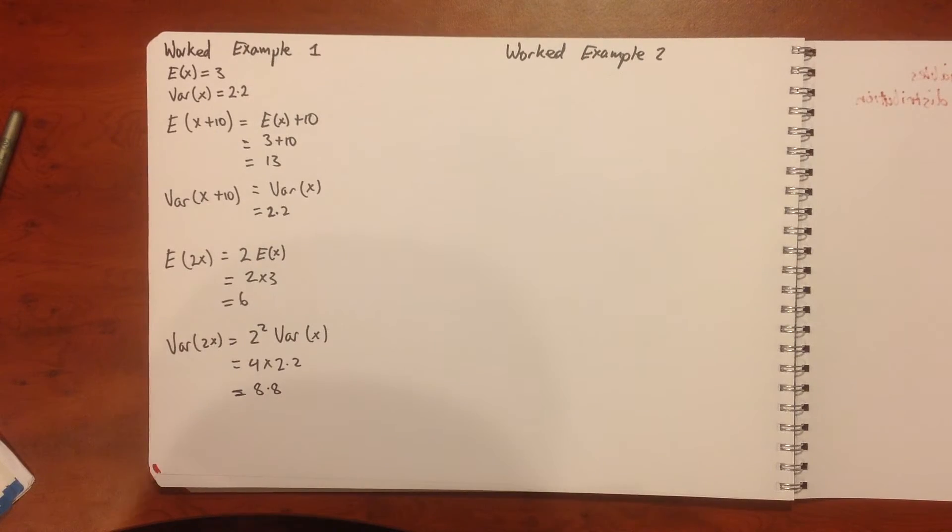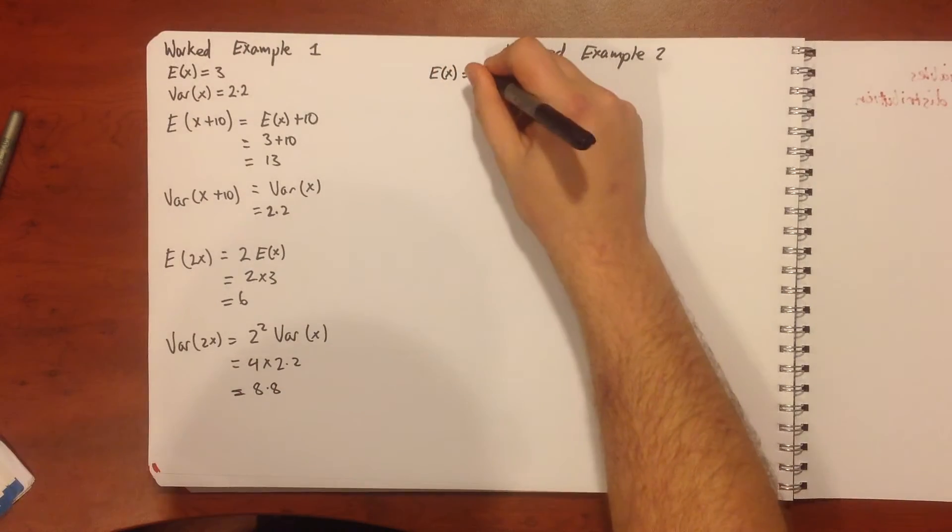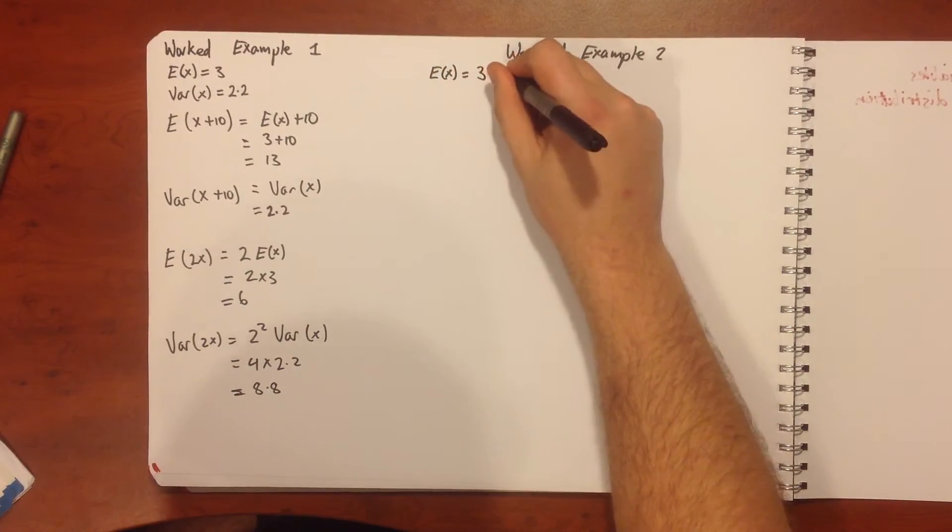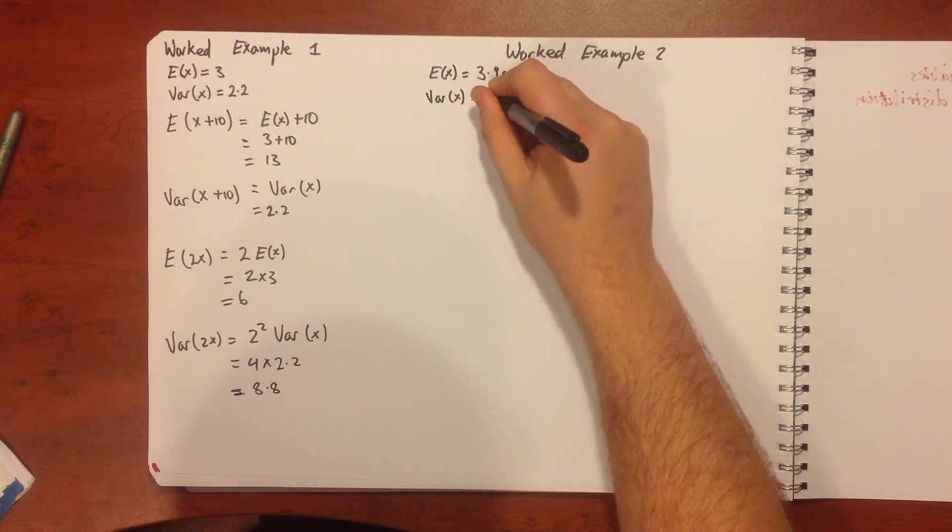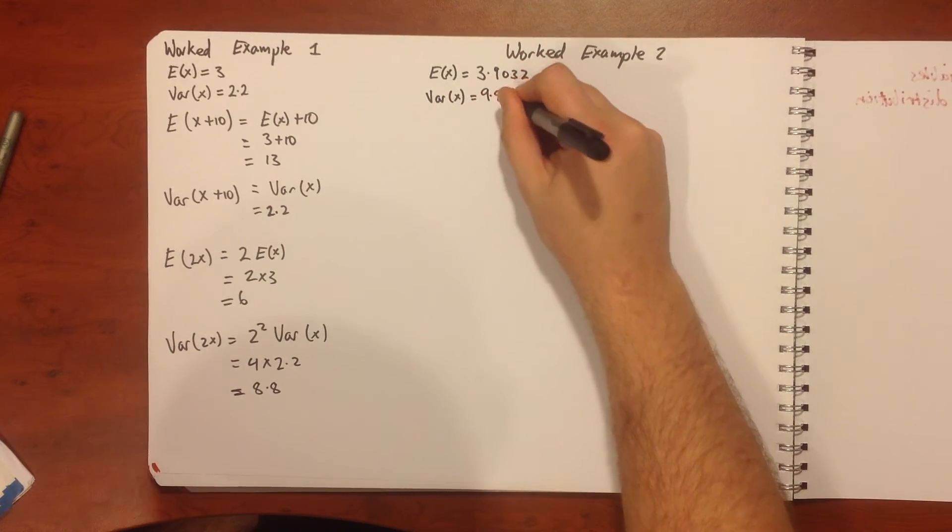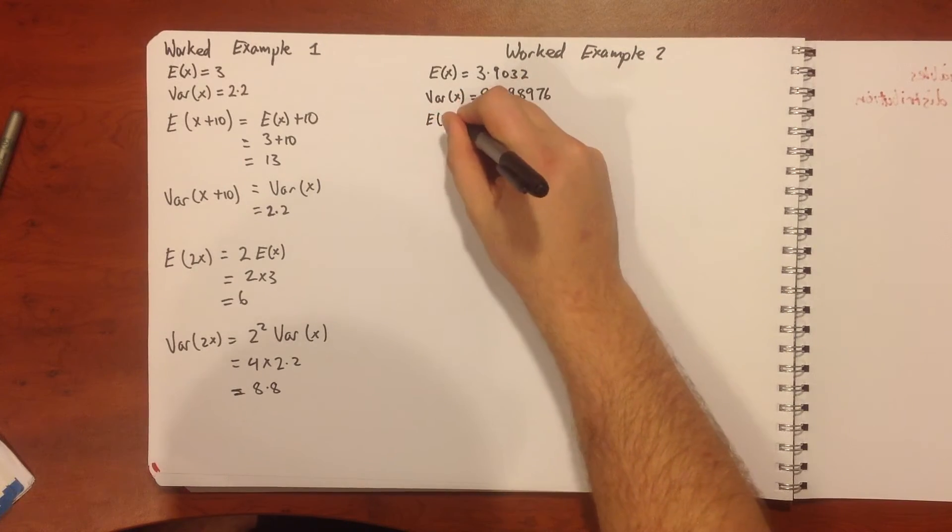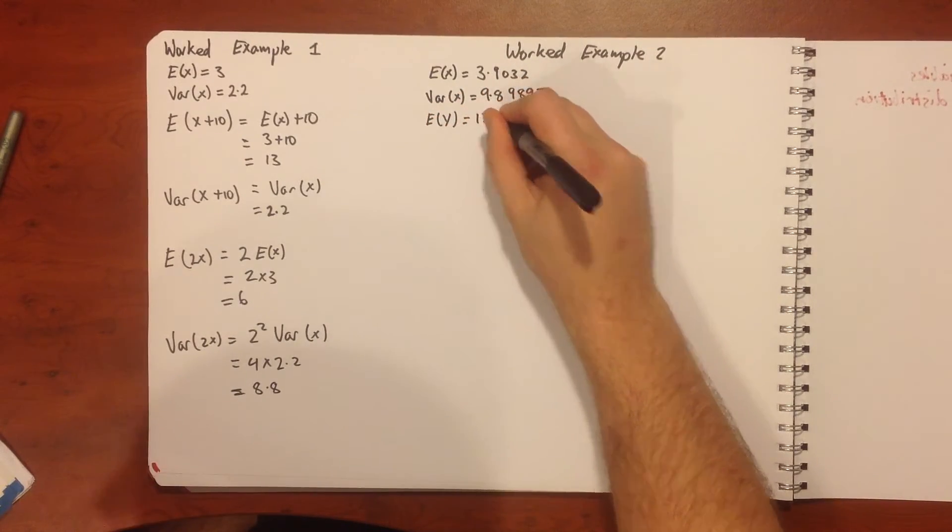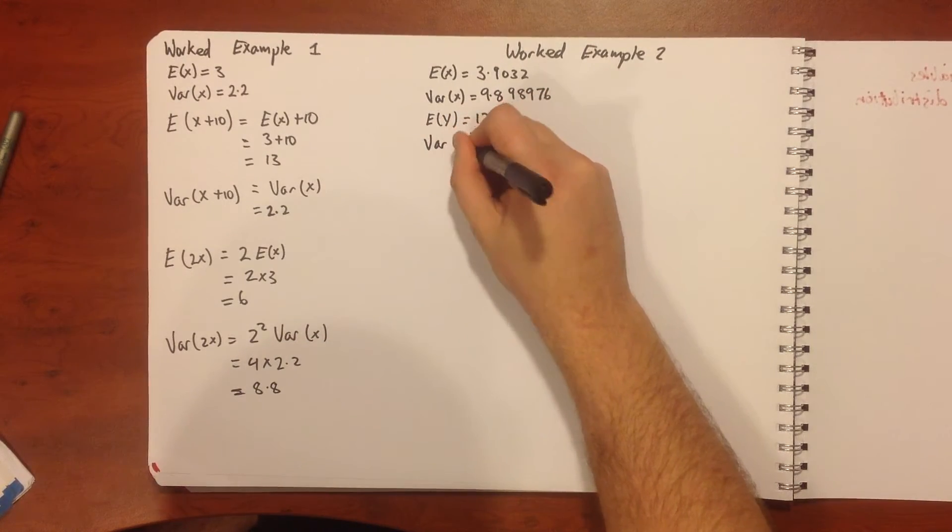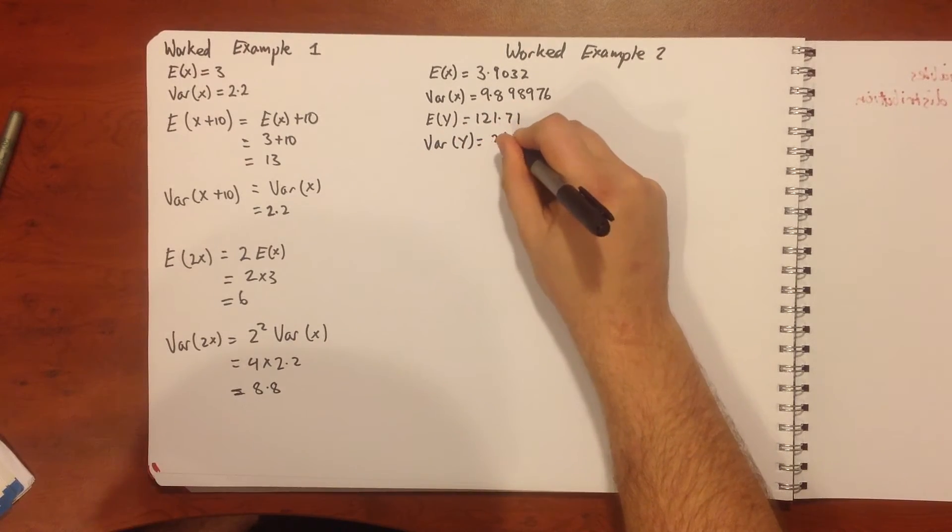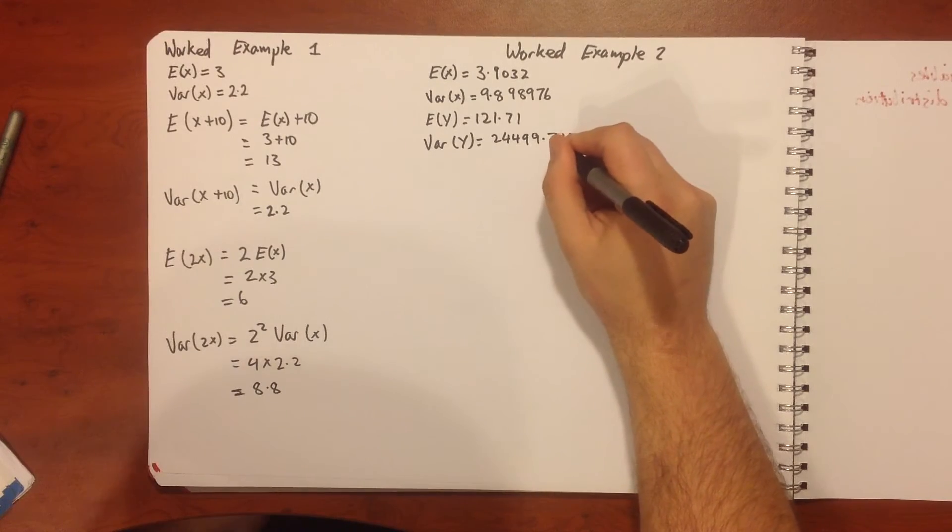We're told that our E of x is equal to 3.9032, our variance of x is equal to 9.898976, our E of y is equal to 121.71, and our variance of y is equal to 24499.7129.